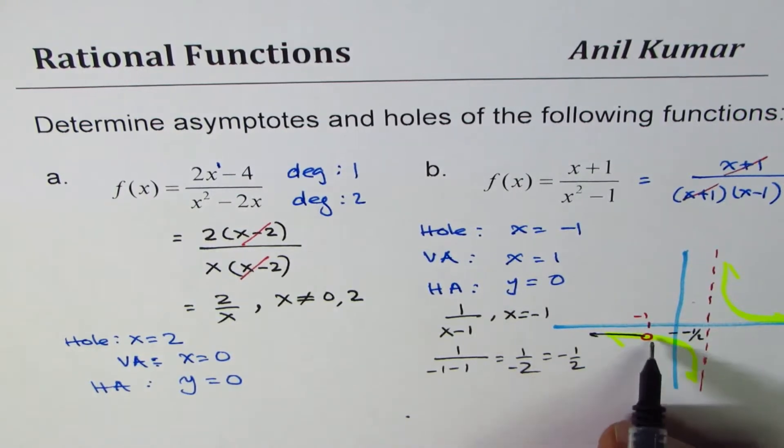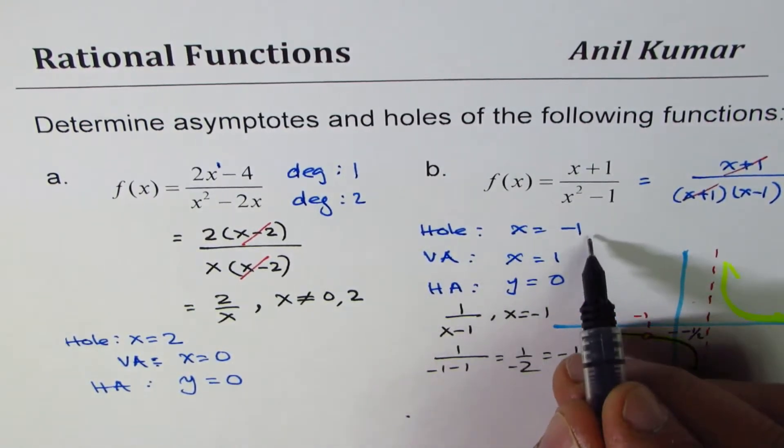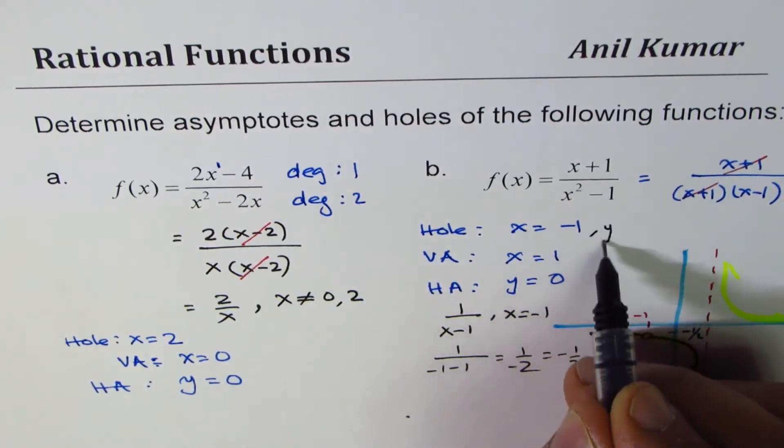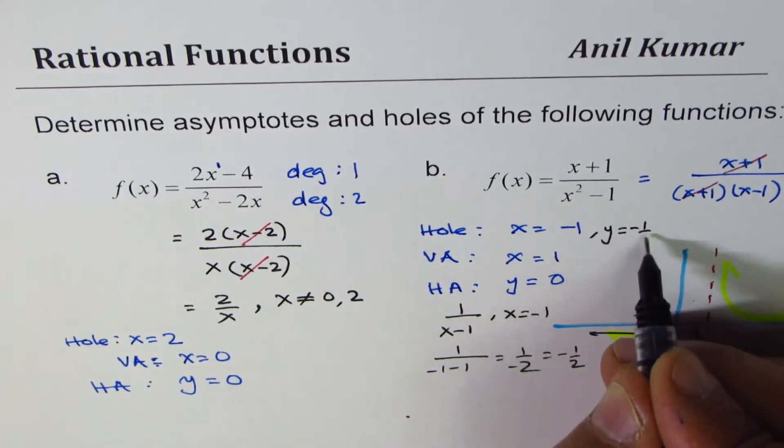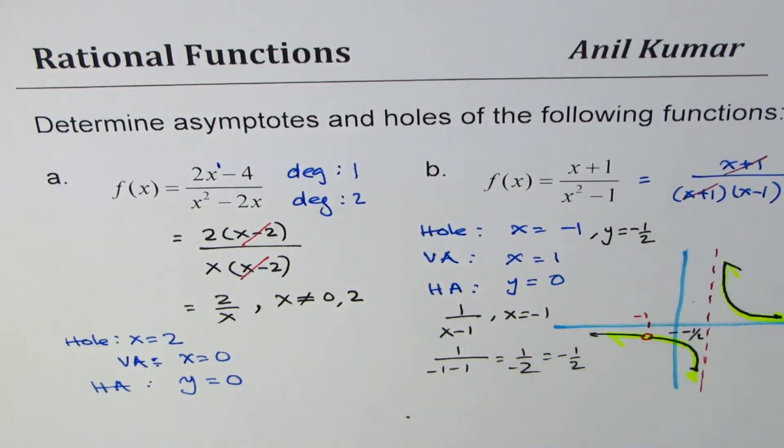So that is the graph of this function. We can say the hole is at x equals minus 1, y equals minus half. Perfect.